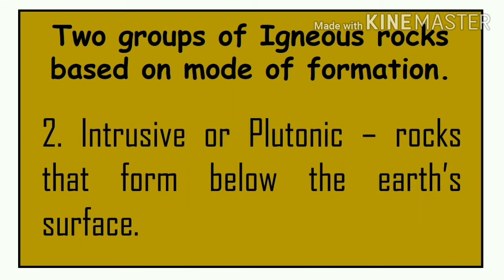The second group is intrusive or plutonic. These are rocks that form below the earth's surface. So if the earth's surface is here, intrusive rocks form below it — the magma does not reach the surface and instead cools and solidifies beneath.